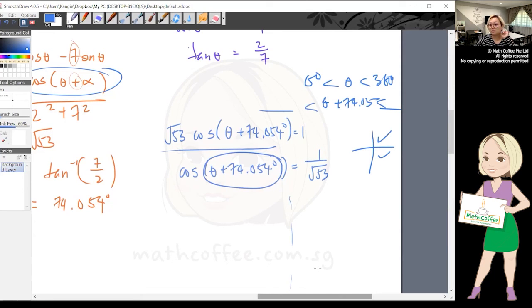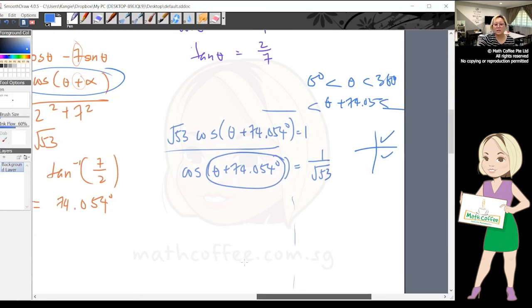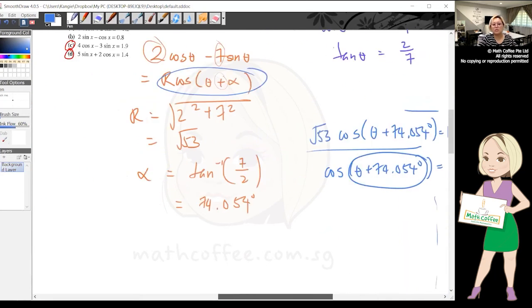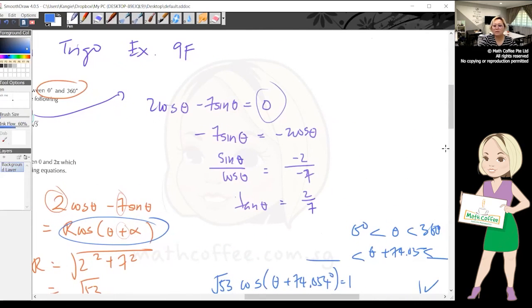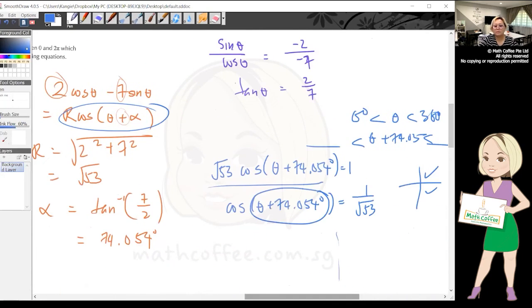Yeah, so actually it's not tough. The only thing is you just need to change the left hand side into single trig using R formula, that's all. Okay, thank you.